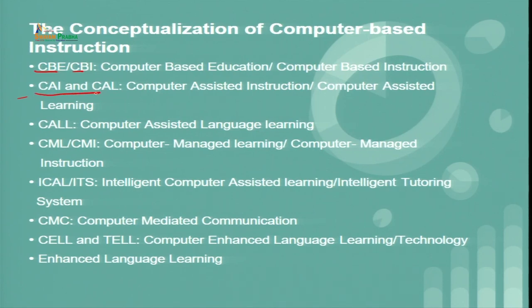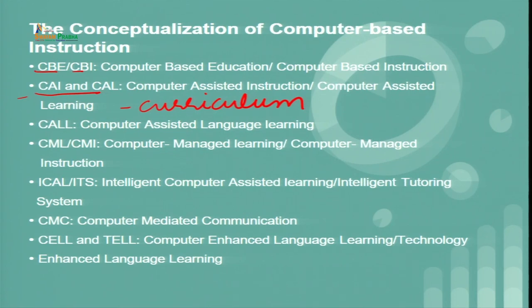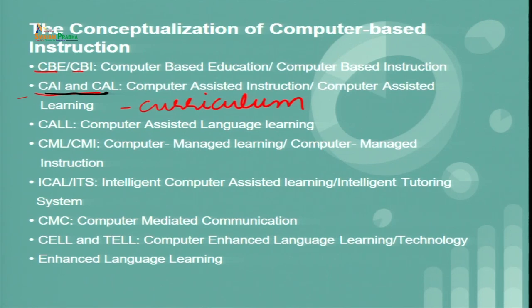Coming to the second point: CAI and CAL. Computer-assisted learning or computer-assisted instruction are used to refer to computer learning that guides the learner through a prescribed curriculum — the materials used in teaching and learning. According to many scholars, there are a number of functions performed by the teacher, the learner, and the computer. The terms 'aided' and 'assisted' indicate that it is entering learners' experience as part of their curriculum.